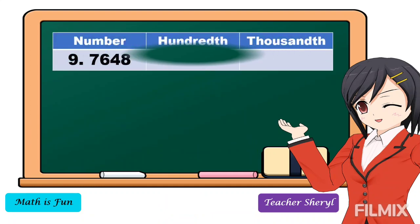Another example. We're going to round this number to the nearest hundredths and thousandths. First, we're going to round it off to the nearest hundredths — we're going to find the hundredths digit. This is tens, hundreds. So the rounding digit is 6. Then we're going to look at the digit to the right of 6.